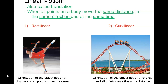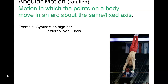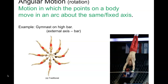Angular motion is rotation — movement about an axis. When we talked about torque, if a gymnast is spinning on a bar, the bar is the axis. All points on the body are not moving the same distance: his feet are moving a much greater distance than his elbows, but they are both rotating about that axis.